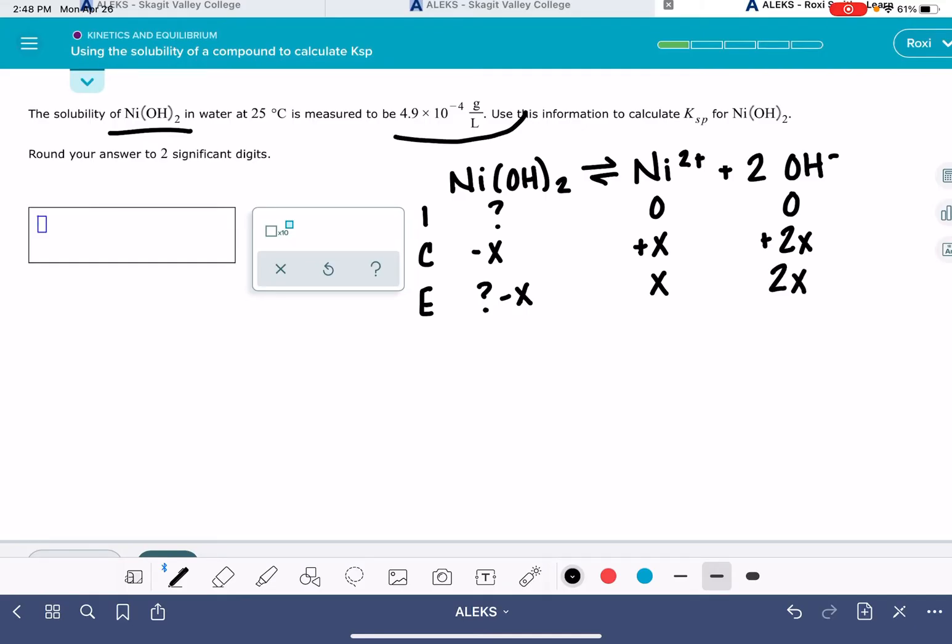The problem tells us that the solubility of this compound is 4.9 times 10 to the minus 4, and that is in units of grams per liter. In an ICE table, the solubility of the compound is represented right here. So that 4.9 times 10 to the minus 4, that is giving us that highlighted green X value that I have there.